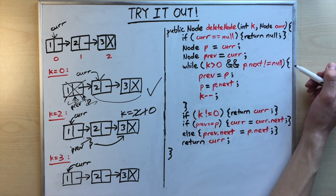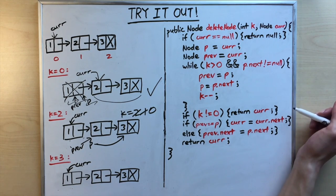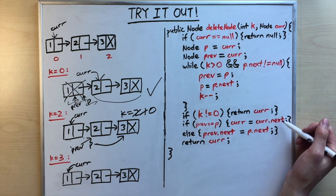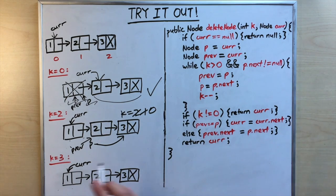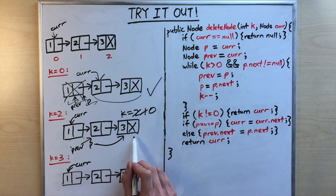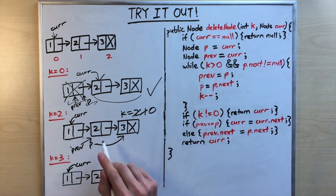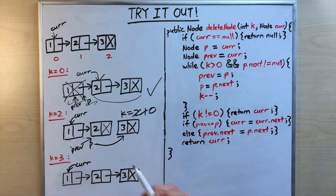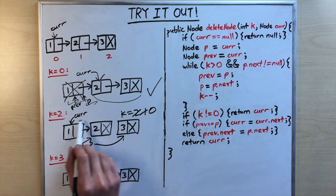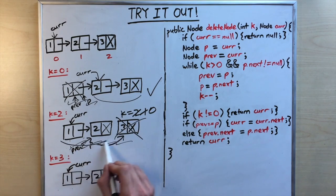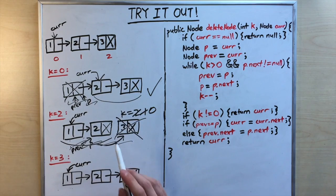We exit the loop since k equals zero. k does not equal zero is false, so we continue. prev and p point to different nodes, so we go to the else branch and set prev.next equal to p.next, which is null. This removes the last node. Two for three.